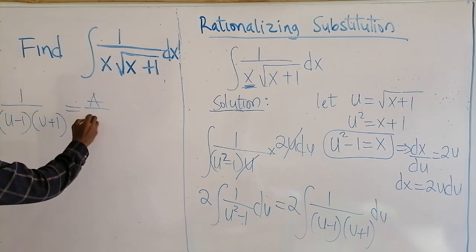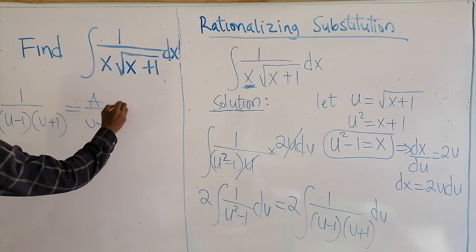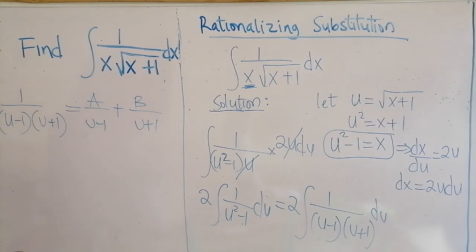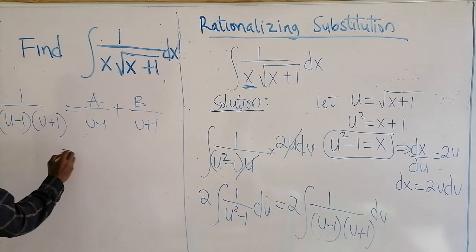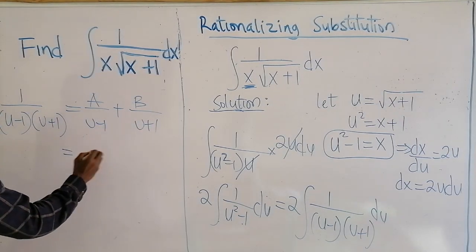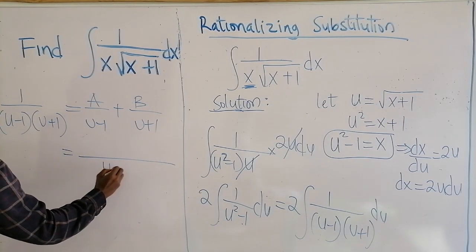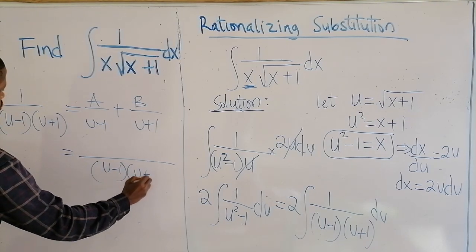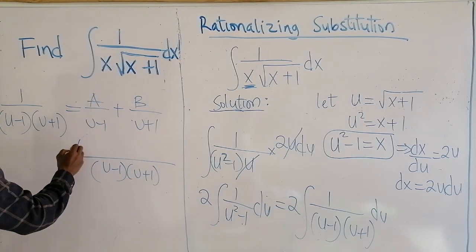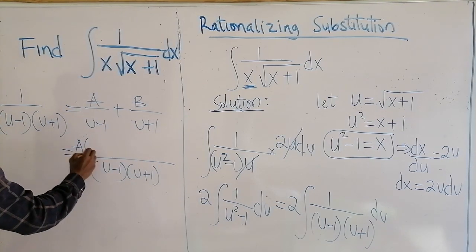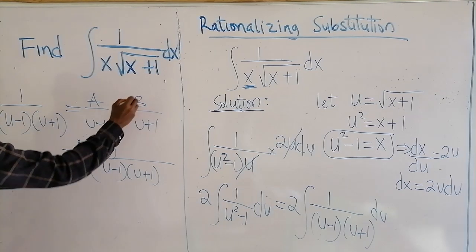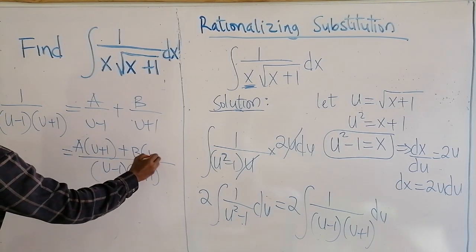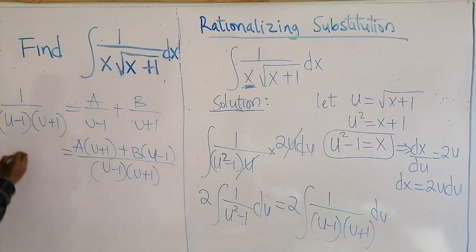We are going to take this expression and solve using partial fractions. So 1 over (u minus 1)(u plus 1) equals A over (u minus 1) plus B over (u plus 1). Expressing the right-hand side as a single fraction with denominator (u minus 1)(u plus 1), we get A(u plus 1) plus B(u minus 1) in the numerator.